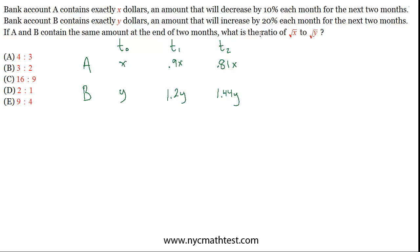The question is, at the end of two months, what's the ratio? If they're the same amount at the end of two months, so if these two are equal to each other, then what's the ratio of root X to root Y? Well, let's do this. Let's find the ratio of X to Y, and then we can take the square root of that, and we'll have the ratio of root X to root Y.